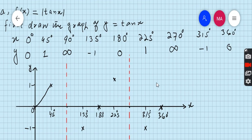Look at this: when x is 0, then y is 0. First square at (0, 0). When x is 45, then y is 1. When x is 90, then y is undefined, so draw the red dotted line—this is an asymptote. When x is 135, then y is minus 1. When x is 180, then y is 0. When x is 225, then y is 1. When x is 270, then y is undefined, so this is the second asymptote. When x is 315, then y is minus 1, and when x is 360, then y is 0.